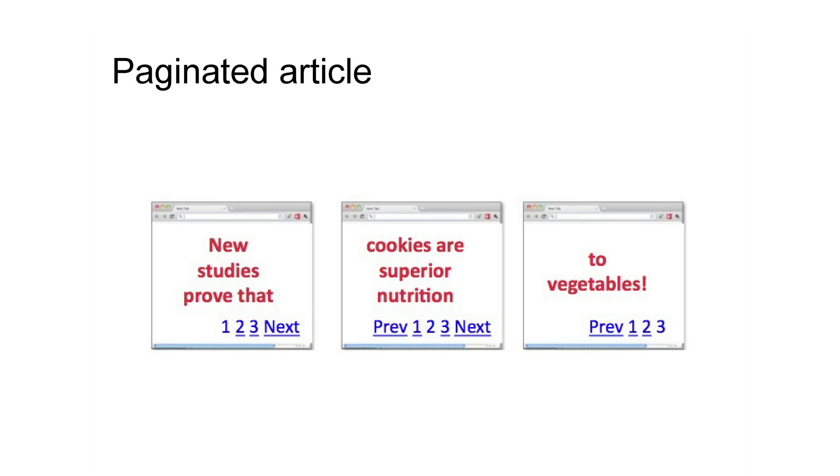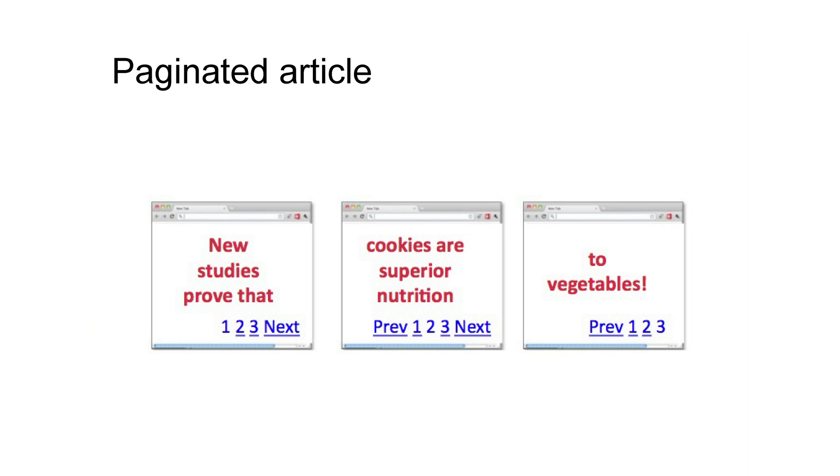Let's go ahead and start with some paginated content examples. Paginated content exists throughout the web, and I'm going to cover two of the common cases. One is a paginated article. So let's say you go to your favorite content site and you see the breaking news story: "New studies prove that cookies are superior nutrition to vegetables." Your favorite site might not put this all on one page, but instead paginate it into several component pages. Now this one article has become three — this is an example of paginated content articles.